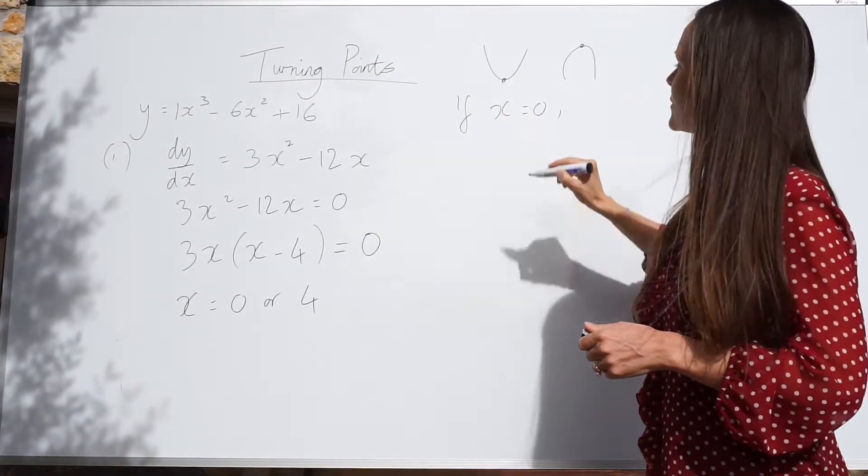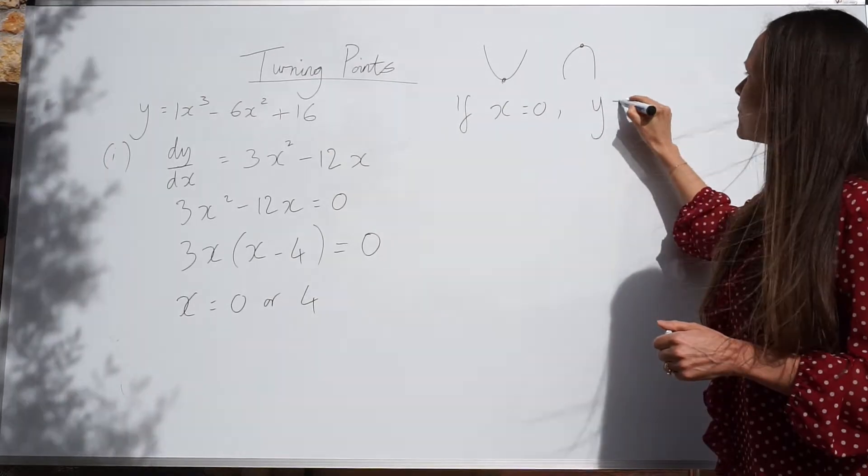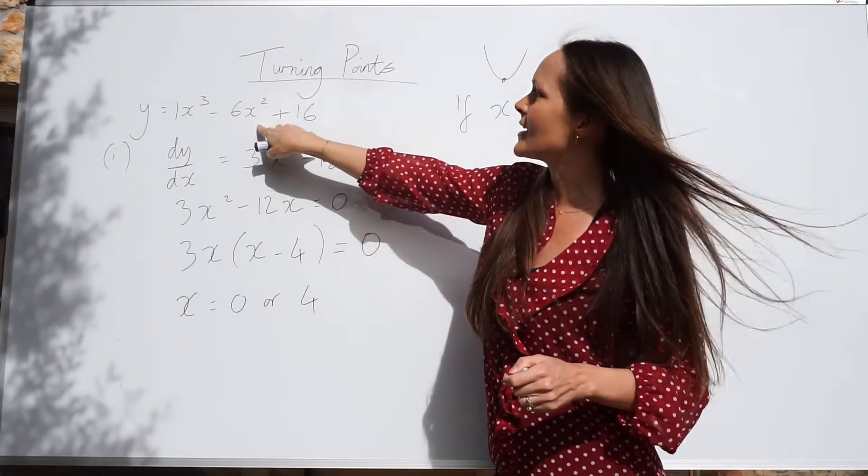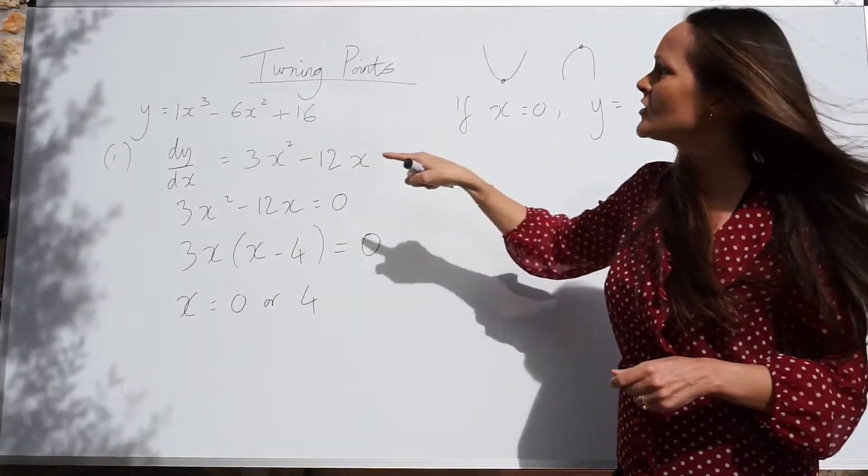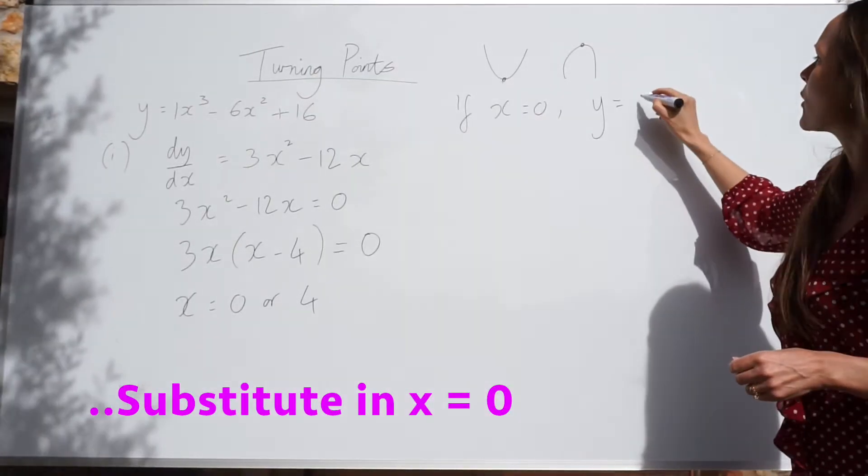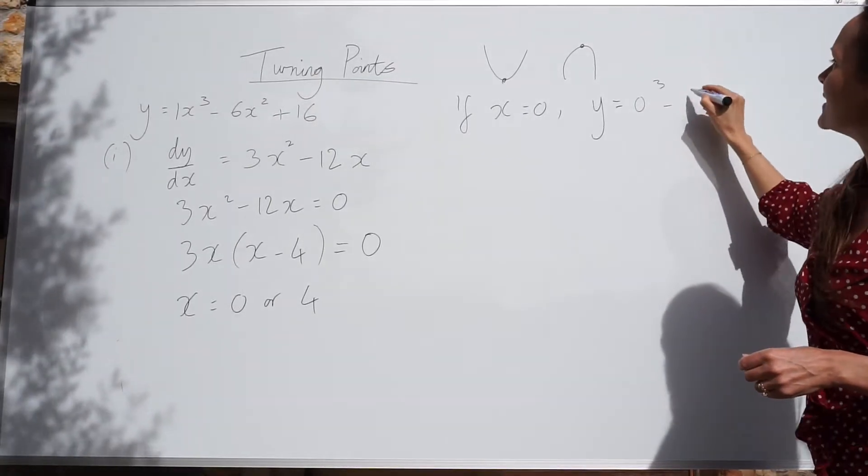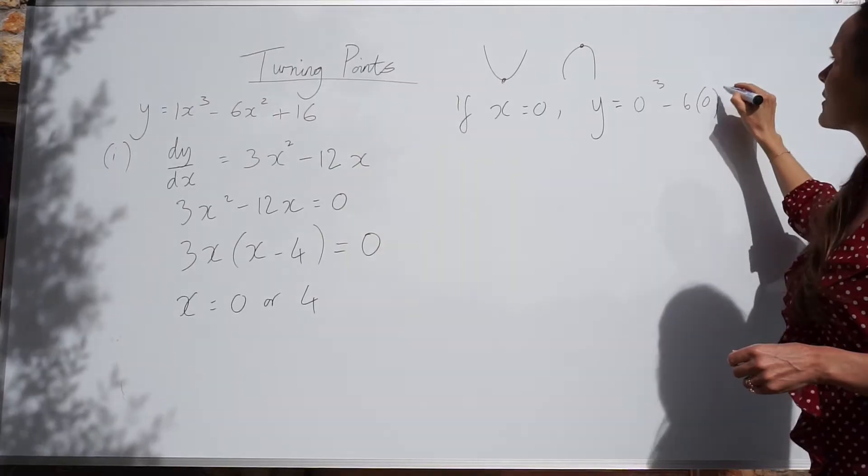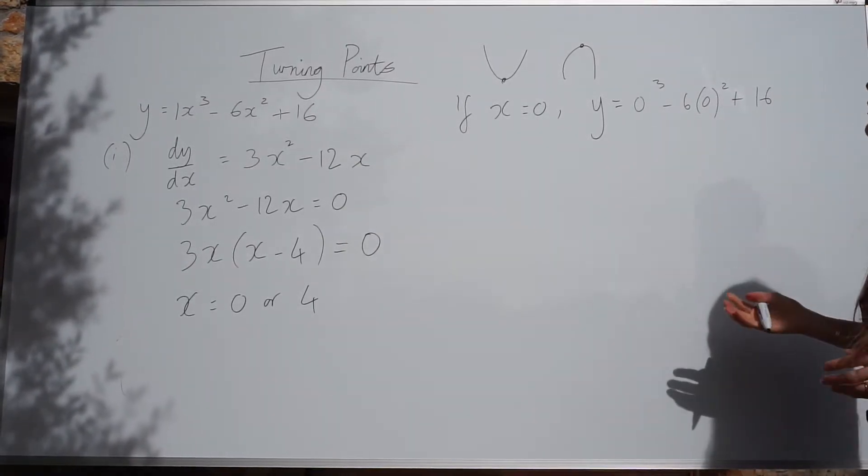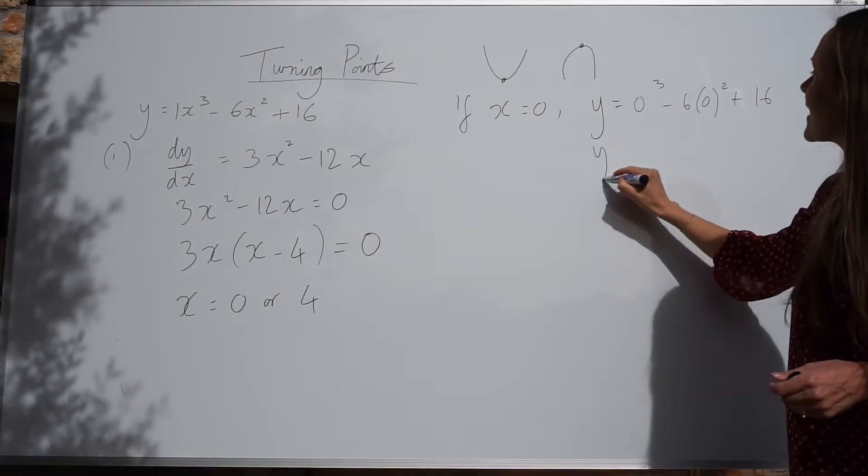If x is equal to 0, we find y by cubing x, then minus 6x squared plus 16. I'm changing these two values of x to 0. Because x is 0. So we've got 0 cubed minus 6 lots of 0 squared plus 16. I know these are 0. I'm just showing all of my working out. It's a good habit to get into.